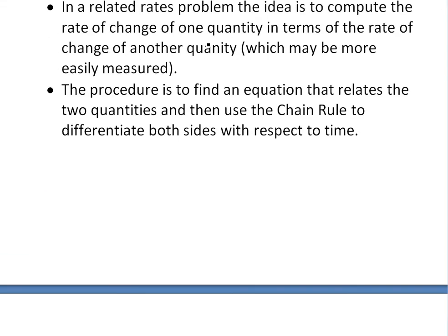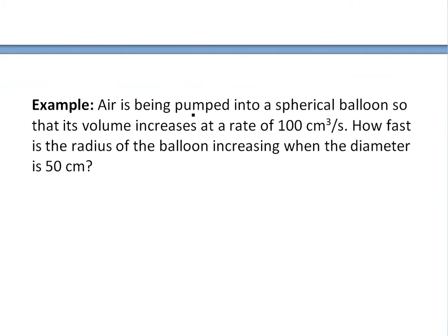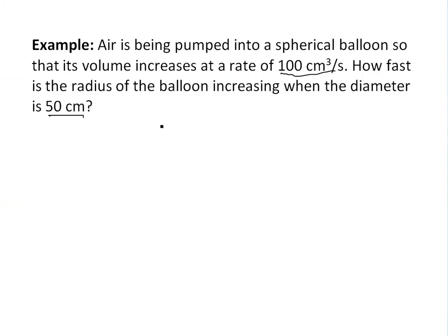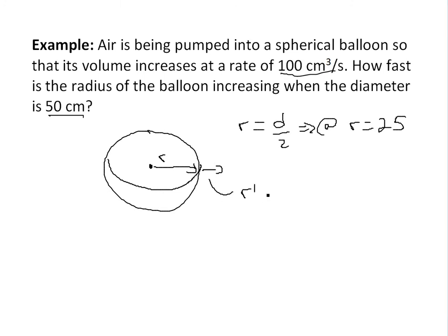I'll go over this idea in this example. Air is being pumped into a spherical balloon so that its volume increases at a rate of 100 centimeters cubed per second. How fast is the radius of the balloon increasing when the diameter is 50 centimeters? Well, we know that if you have a balloon, let's say it's spherical, we have radius r right here. Obviously, r radius is equal to d over 2, so we basically need to find it out at r equals 25. What is the rate of increase? We could call this the rate of increase r prime, and this equals to dr over dt, so the derivative with respect to time at r equals 25.